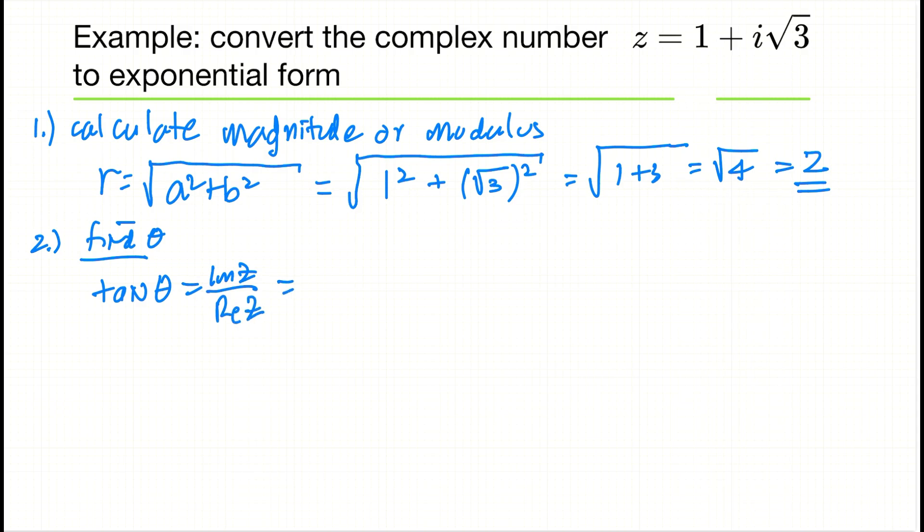Now in this case, √3 is the imaginary part, so it's √3 divided by the real part, which is 1, so it's just equal to √3. We take the inverse tangent of both sides, so tan inverse of tan theta just equals theta, which equals tan inverse of √3.